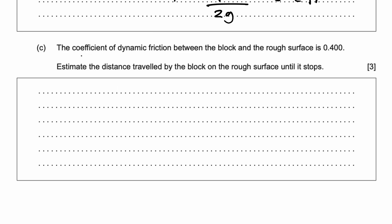Finally, part C. The coefficient of dynamic friction between the block and the rough surface is 0.4. Estimate the distance travelled by the block on the rough surface until it stops. The formula for friction is: friction equals mu_d times the normal force, where mu_d is the coefficient of dynamic friction. They're asking what distance the block travels while friction is the only force acting on it — it's a resistive force.